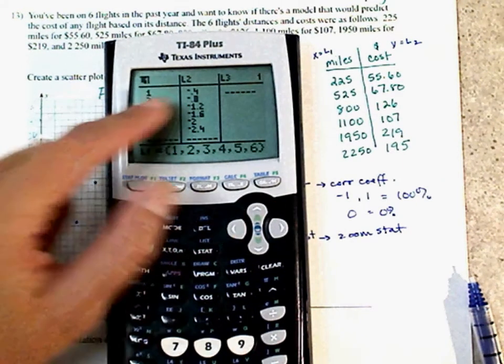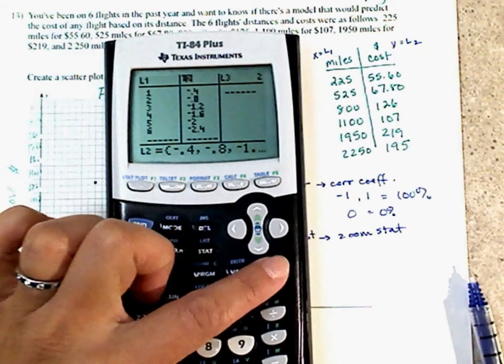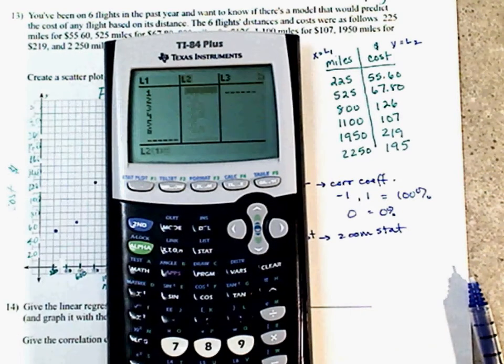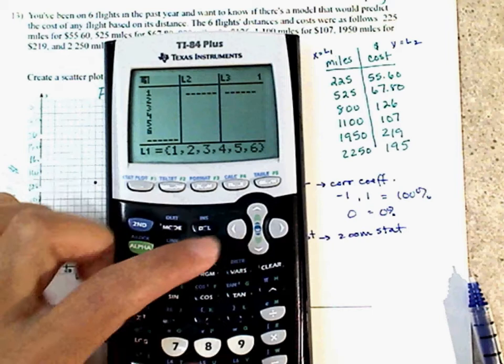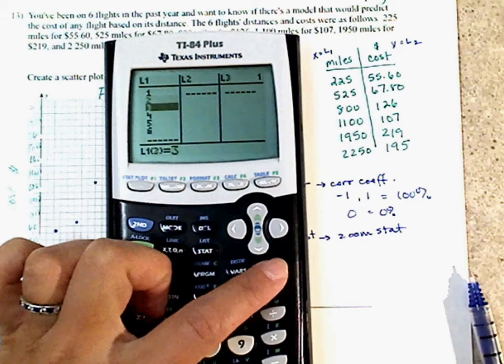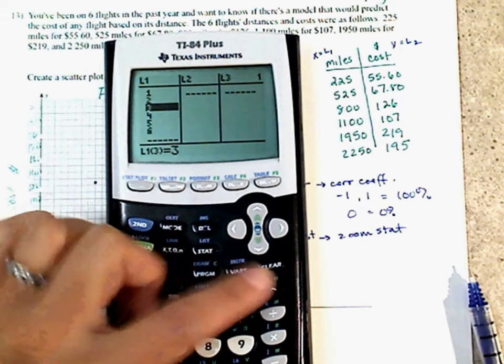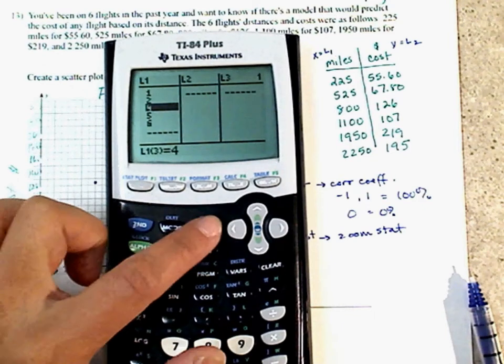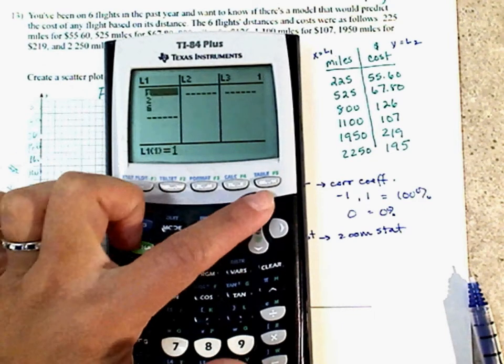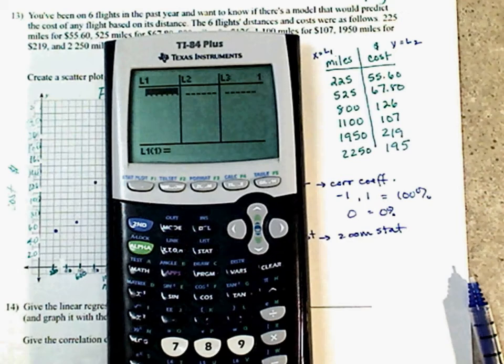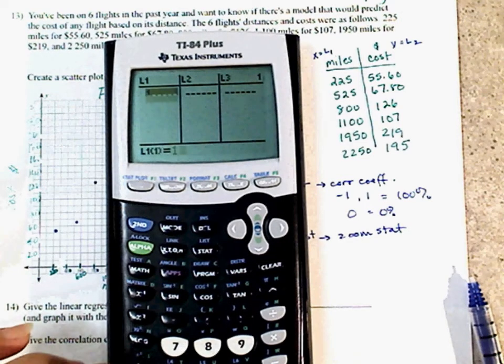Right now, I have data in there that is not mine that I'm going to use here. So all you have to do is highlight L2. Do not hit delete. Hit clear. But if you accidentally hit delete, you see how you just got rid of L2 column? Not a big deal. If you do that, you need to reset this by hitting stat. See where it says set up editor? Hit number five. Hit enter and done. And it will bring this L2 back.